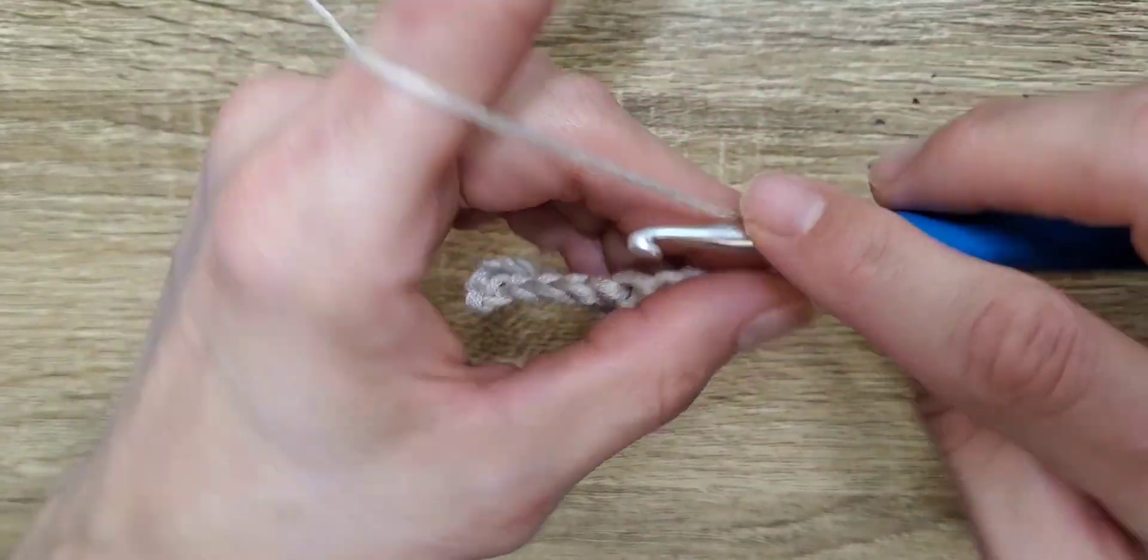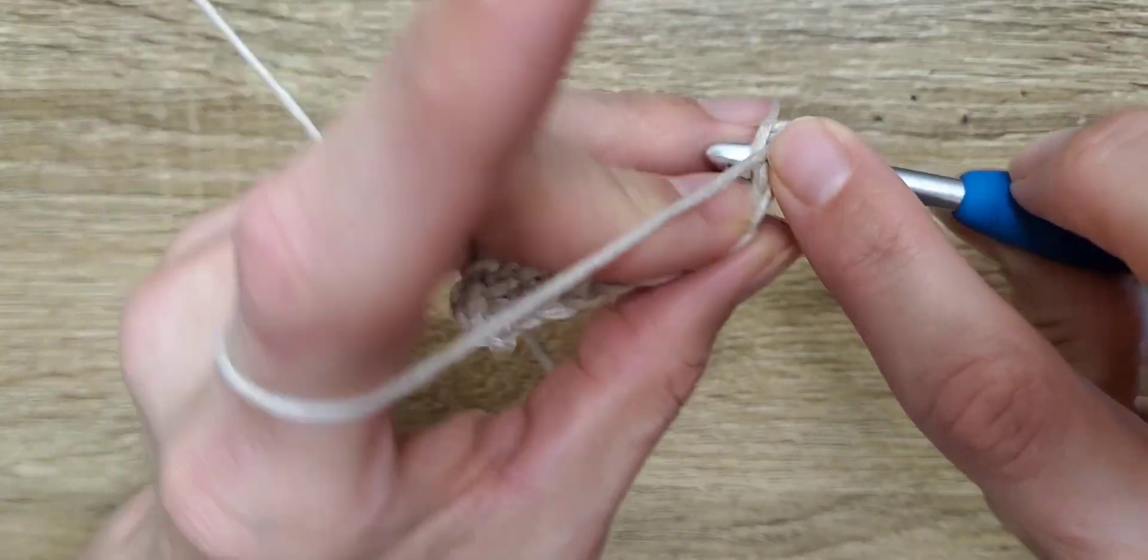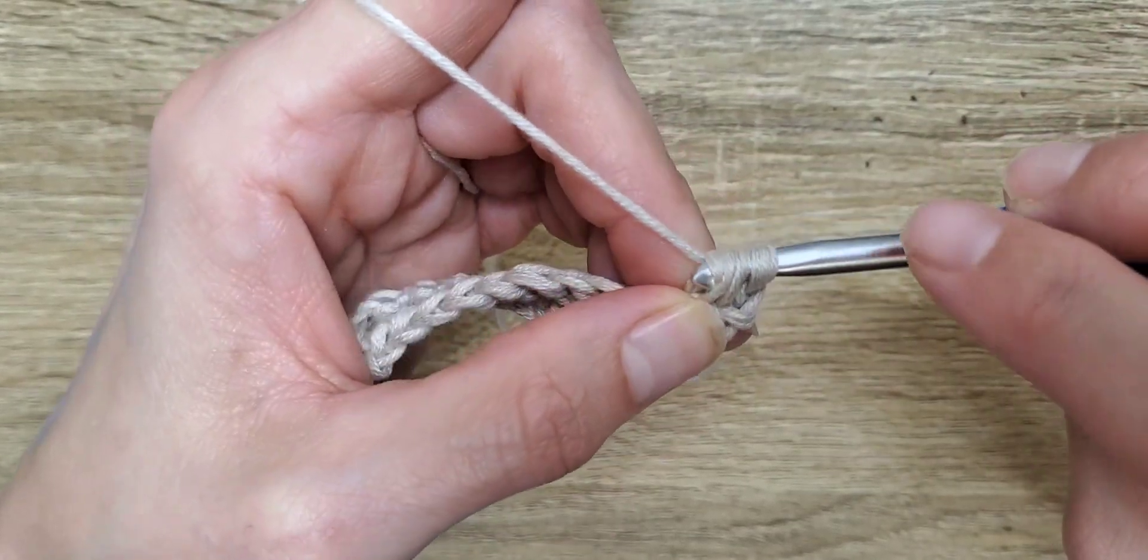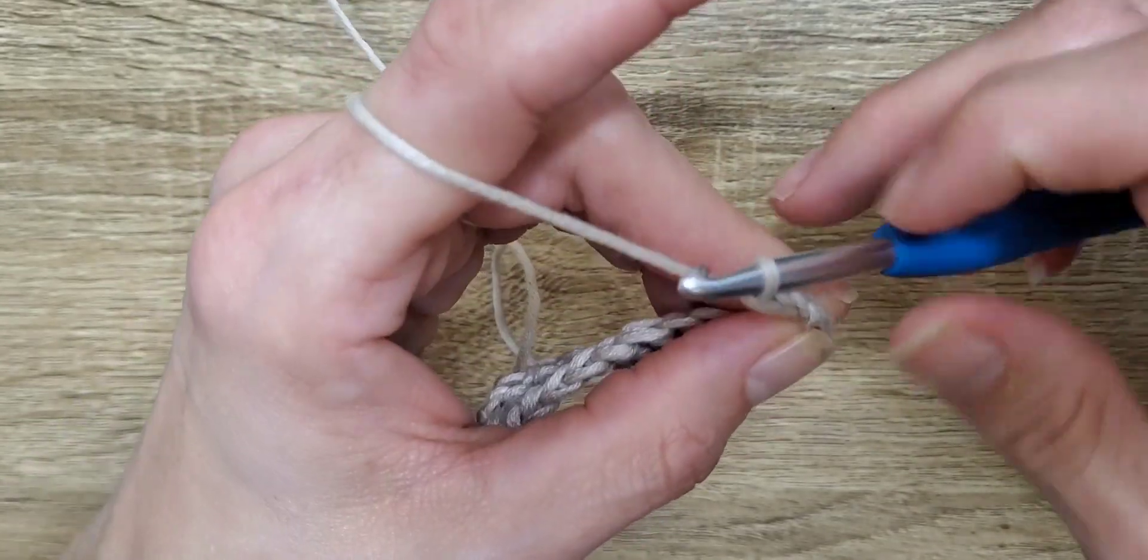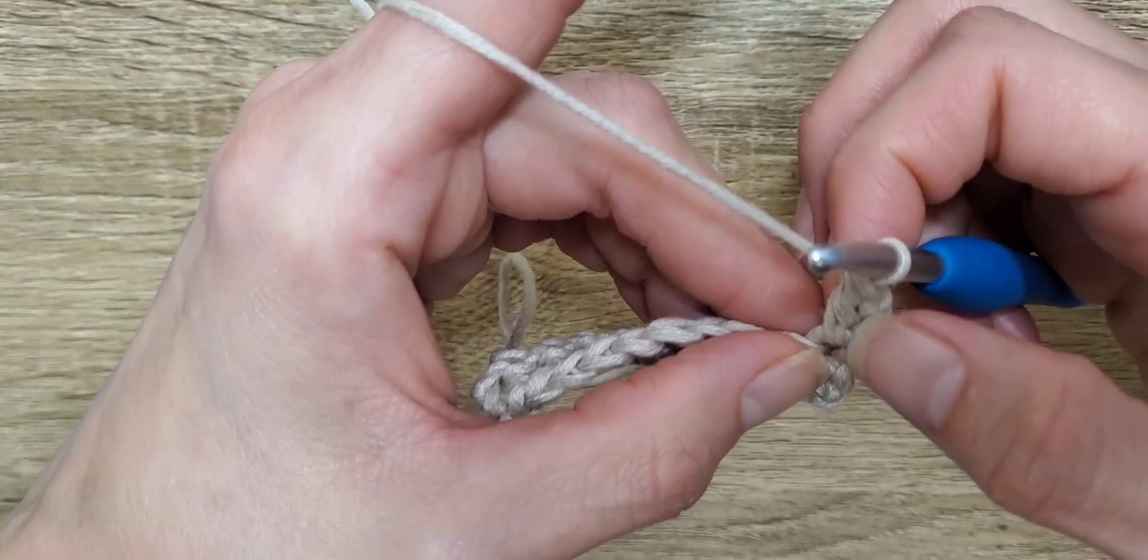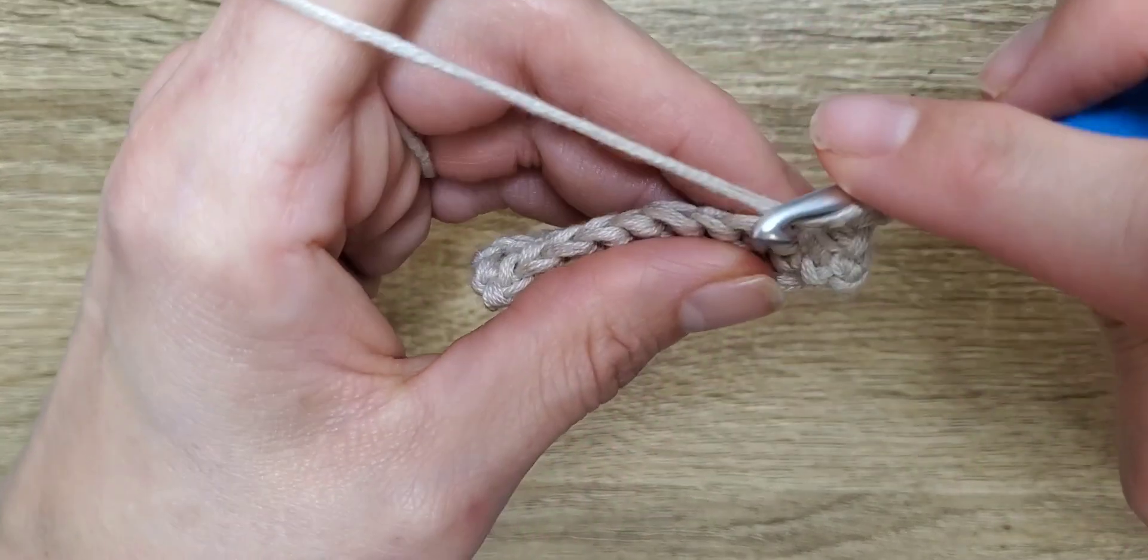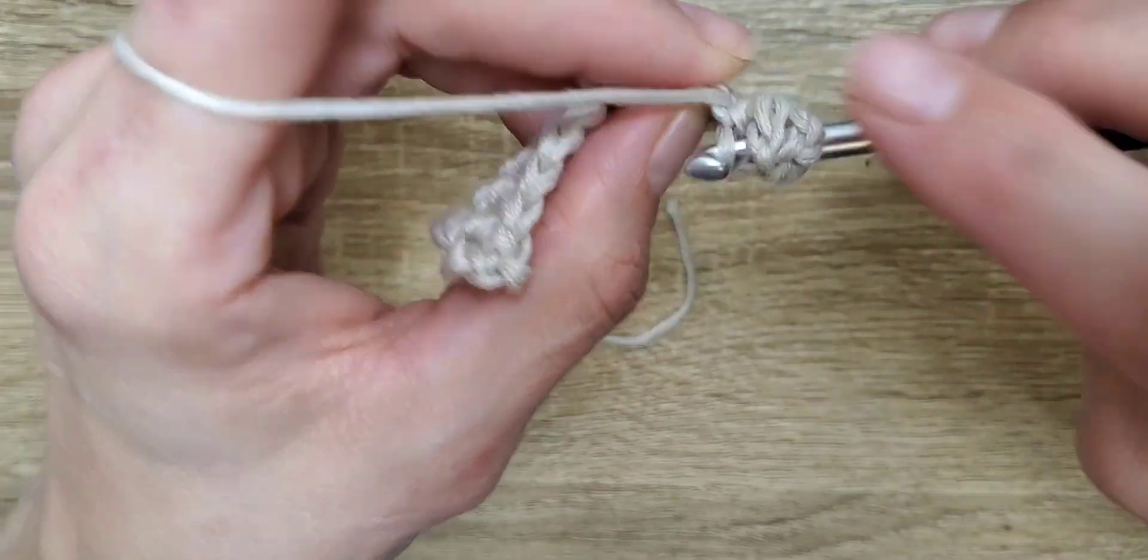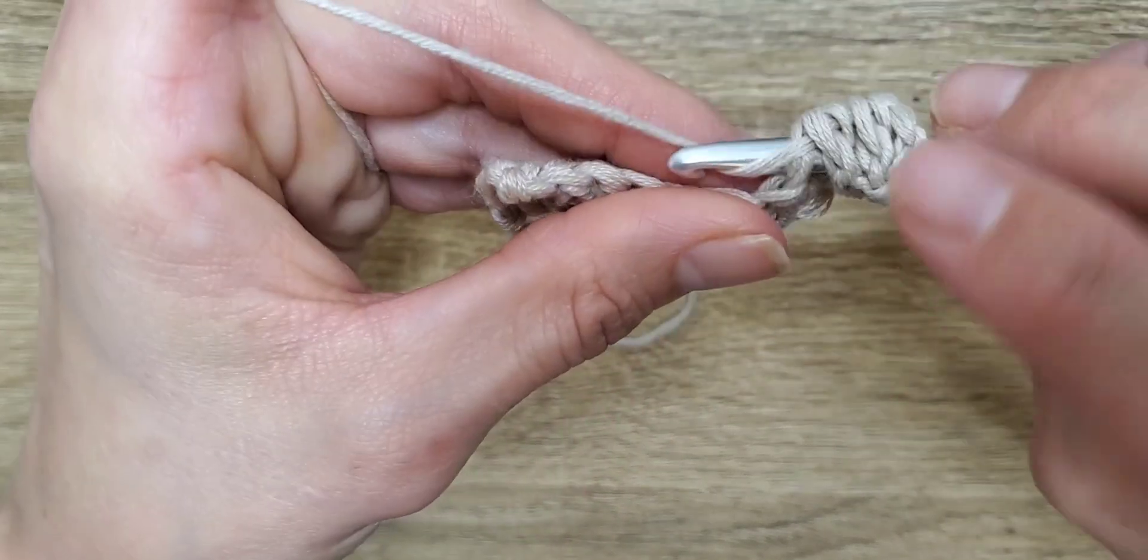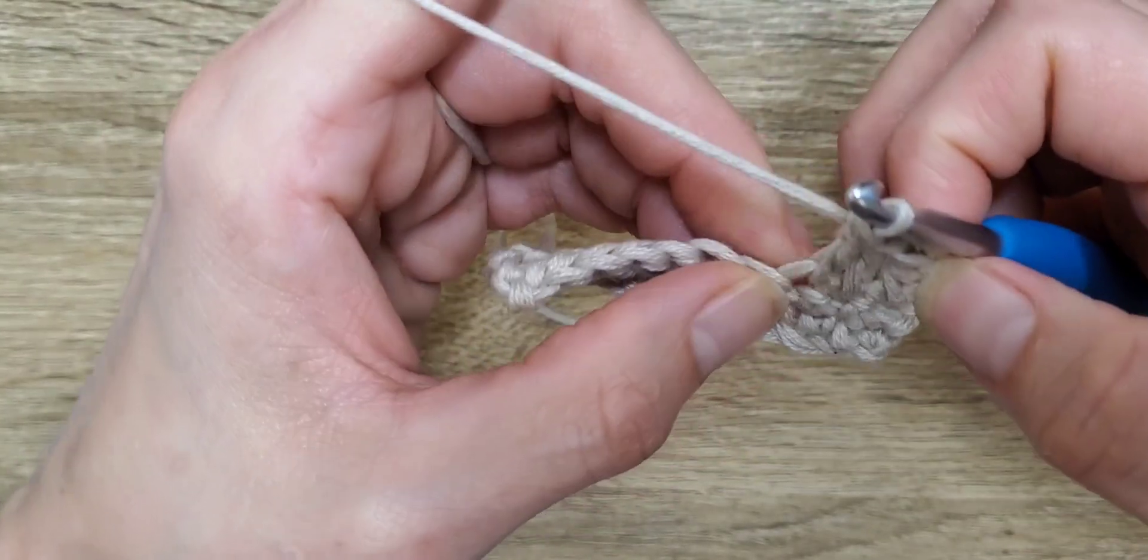So, a double crochet, you're just going to yarn over. So you have two loops on your hook. You're going to push through that hole. Yarn over once. And, you have three loops. You're going to yarn over. Pull through two. Yarn over. Pull through two. And, you've got a double crochet. It's a little bit larger than the single crochet. I use double crochets a lot in the dresses that I do. A double crochet is a very common stitch. So, we're going to do that again. Yarn over. Pull through. Pull through two. Pull through two. Yarn over. Push through your hole. Yarn over. Pull through. Pull through two. Pull through two.